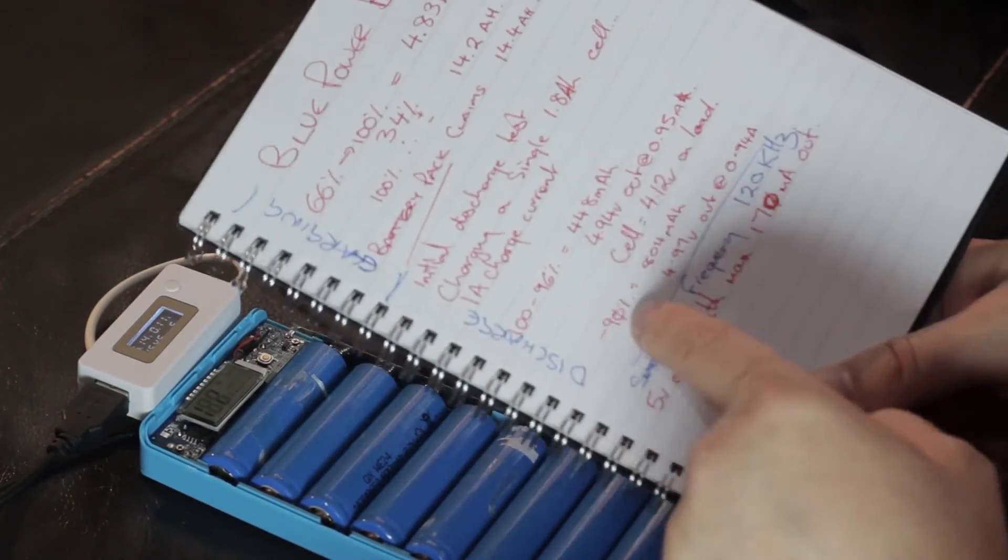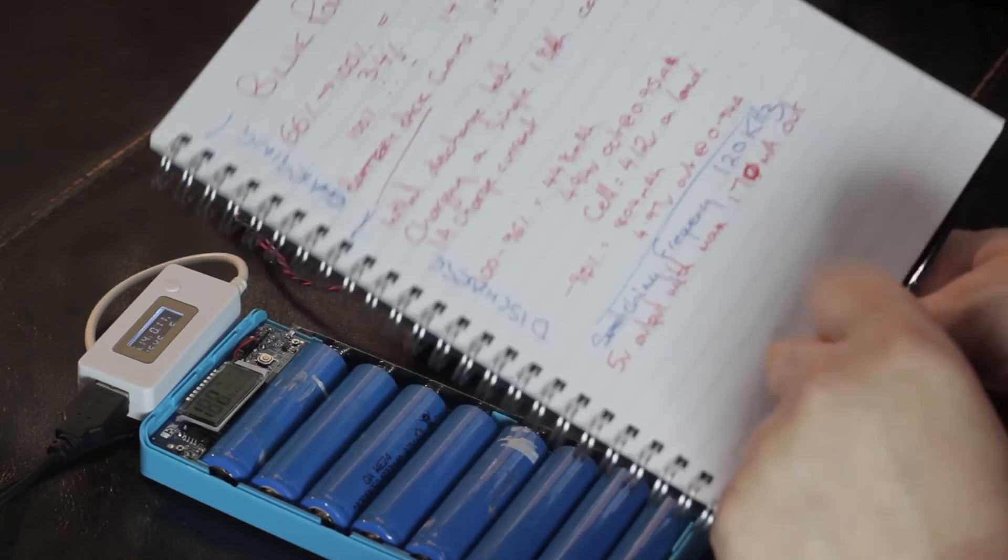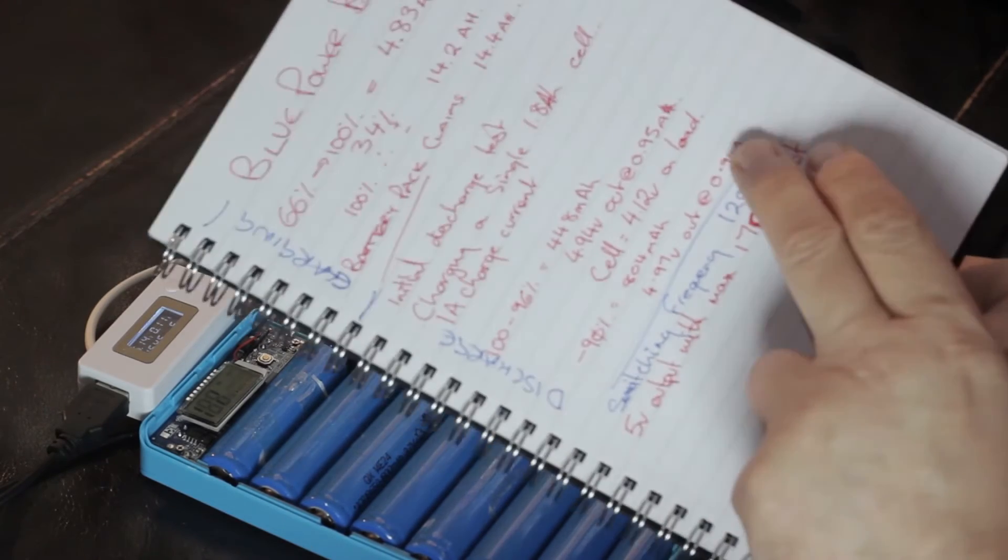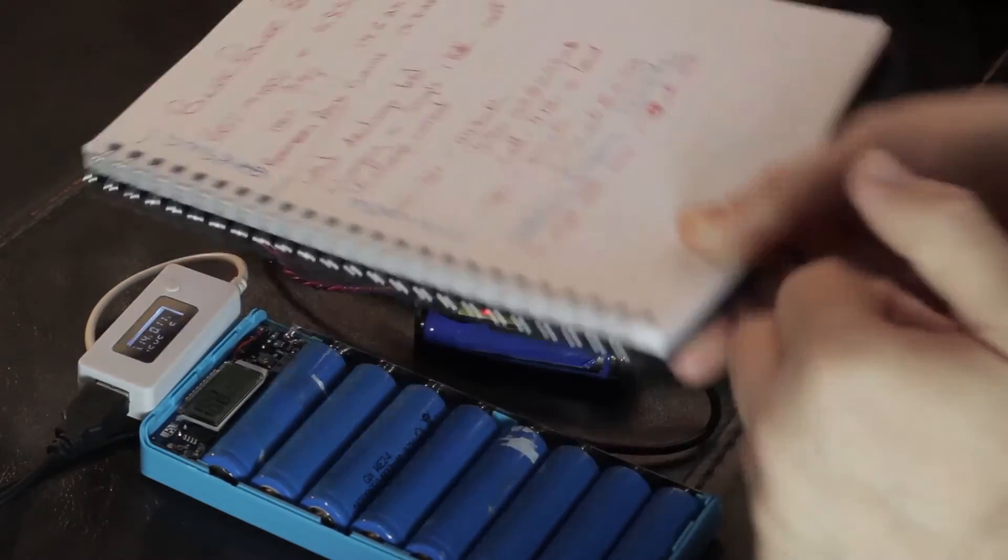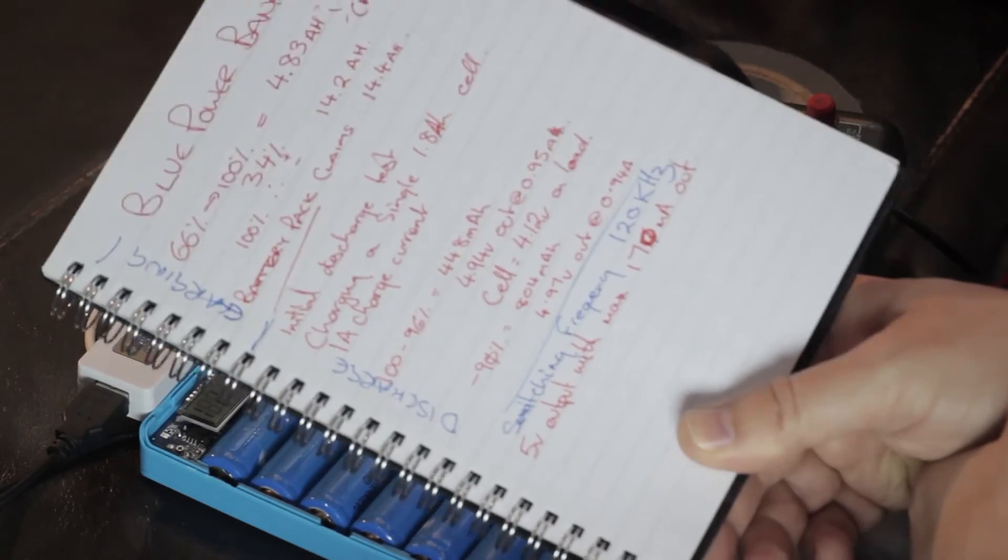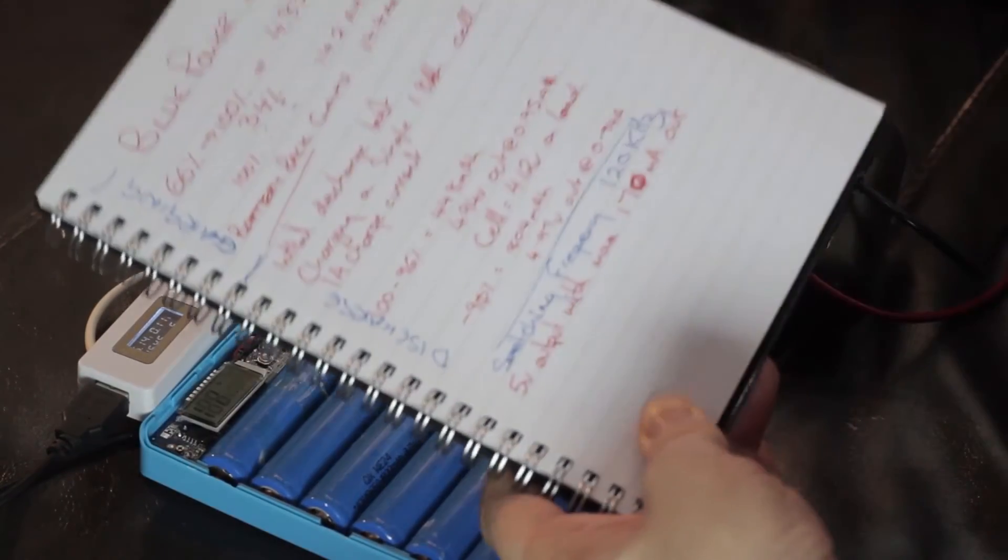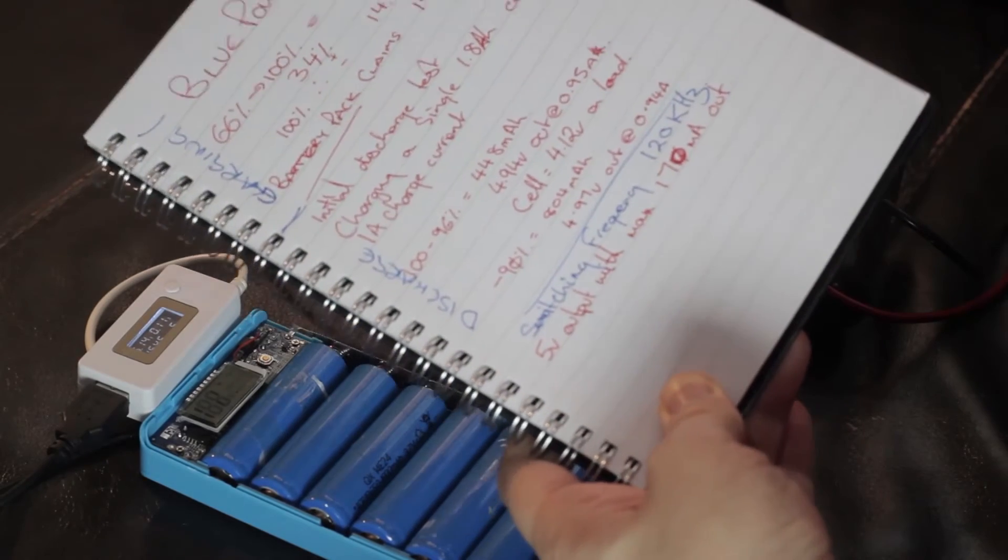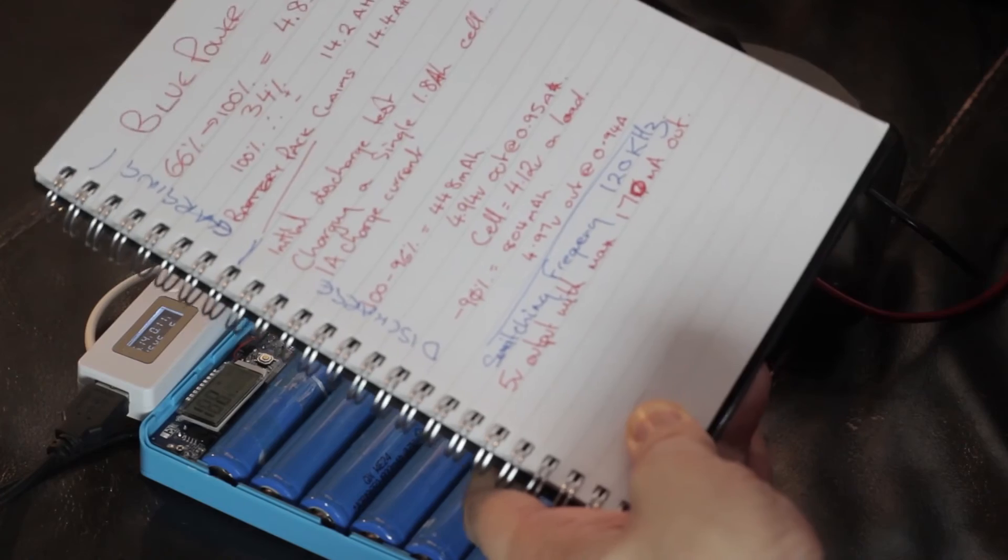Now, the 90% point on the power bank was when 804 milliamps had been drawn, milliamp hours. It was still generating the best part of an amp at 4.97 volts. I then checked a couple of bits and pieces while I was there. The switching frequency of this little regulator, or the boost converter, is about 120 kHz. It's about 116, 120, it's in that zone.